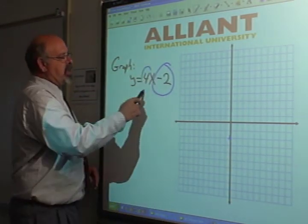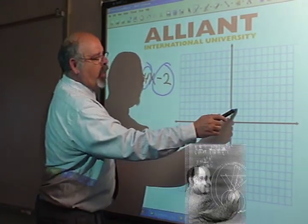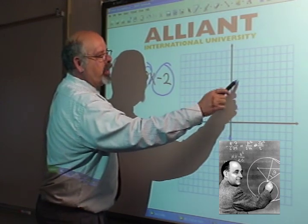The second, this is the slope. It tells you how many to go up 1, 2, 3, 4 over 1. 1, 2, 3, 4 over 1.